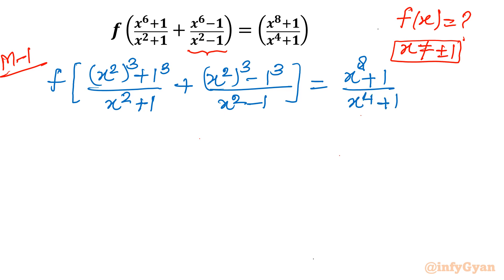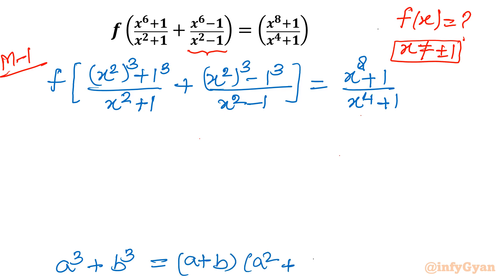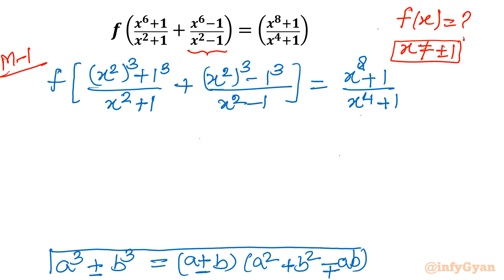Now I will write the identities: a³+b³ = (a+b)(a²+b²-ab), and a³-b³ = (a-b)(a²+b²+ab). These two identities from algebra will be applicable to the first and second terms respectively. Let us apply them now.